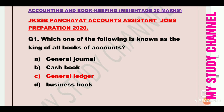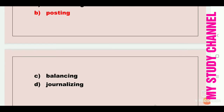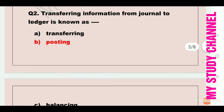Please revise this properly — general ledger is known as the king of all books of accounts. Next question: transferring information from journal to ledger is known as. Option A is transferring, B is posting, C is balancing, and D is journalizing. Here option B is the right answer, that is posting. Transferring information from journal to ledger is known as posting.